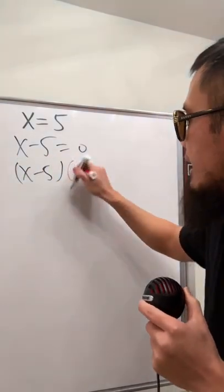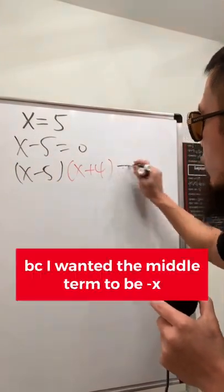And then I will multiply both sides by x plus 4. And you will see why, and this is equal to 0 though.